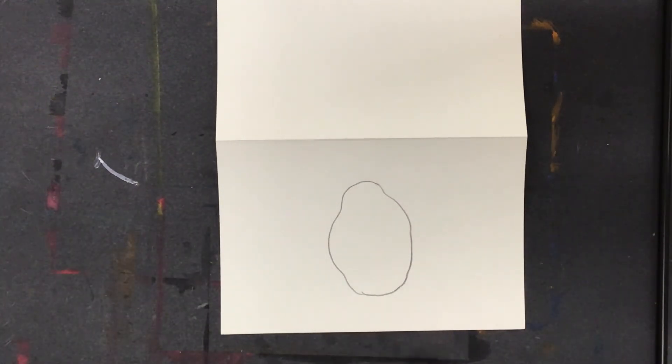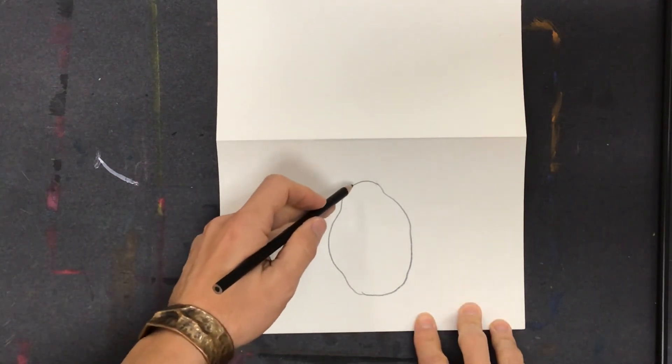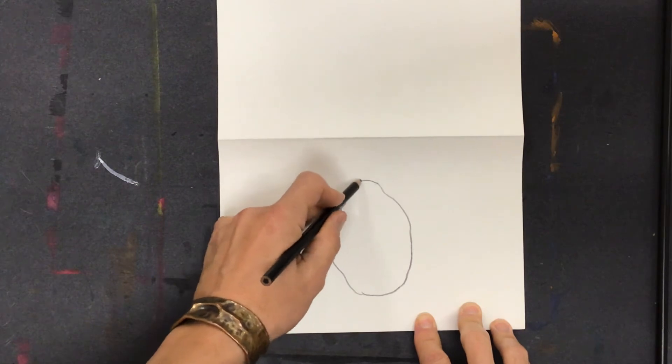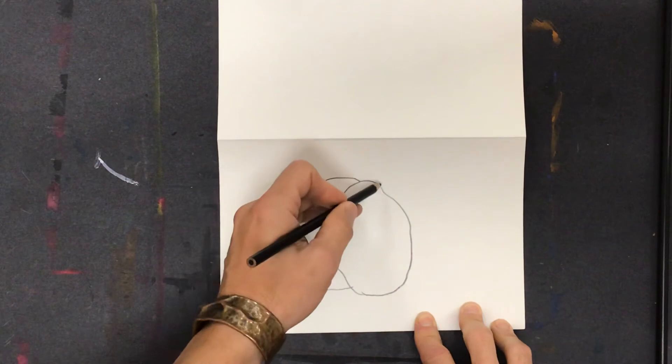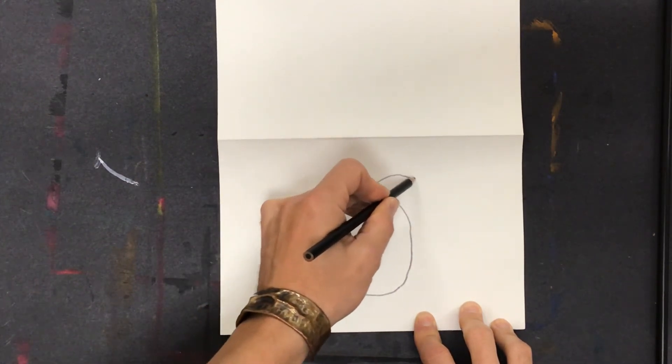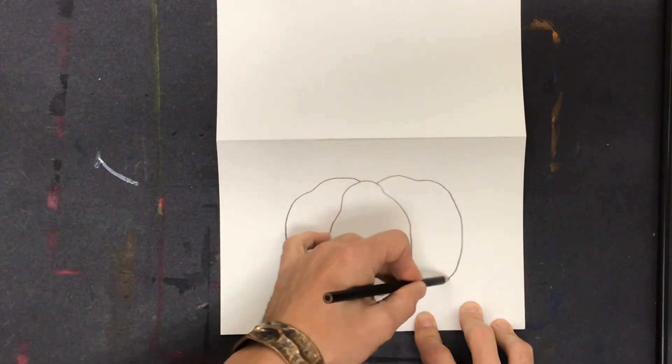So you're going to start with this, and then you're going to have another one coming out from the side here. So it's going to start near the middle, come out this way, and come down to the bottom. Then you're going to go to the other side and come around to the bottom.